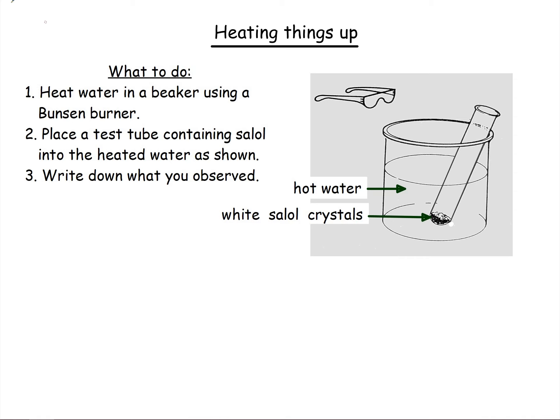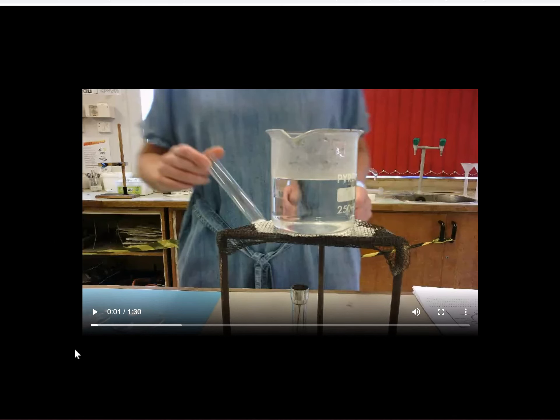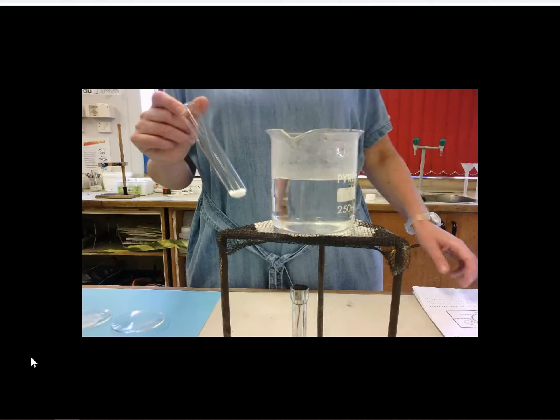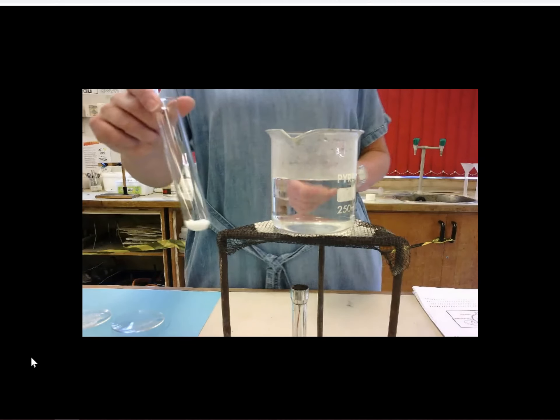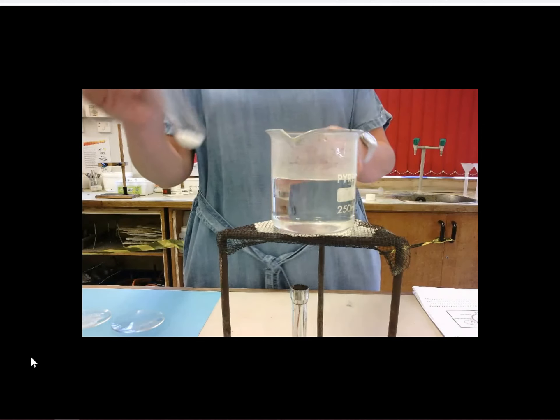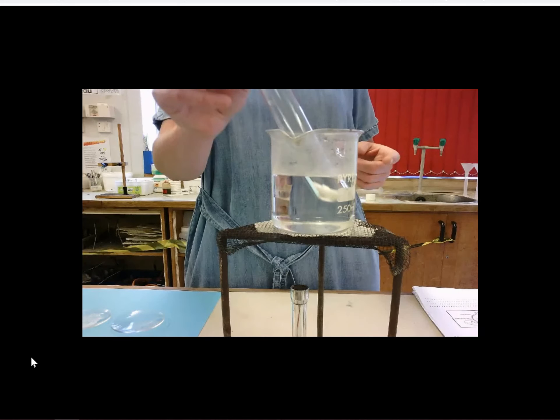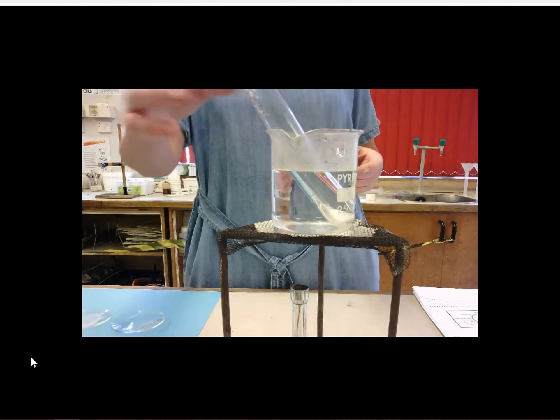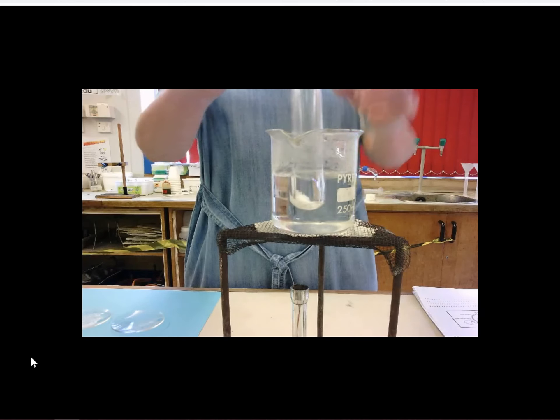A video to watch now. Heating things up, cooling things down. I've got here something called salol, which is a white solid. I'm going to put it into a beaker of water. You can see the beaker's hot. I've just put it up on top of the bunsen. I've knocked the bunsen off now. But we've just got boiling water in there. I'm going to swirl this around.